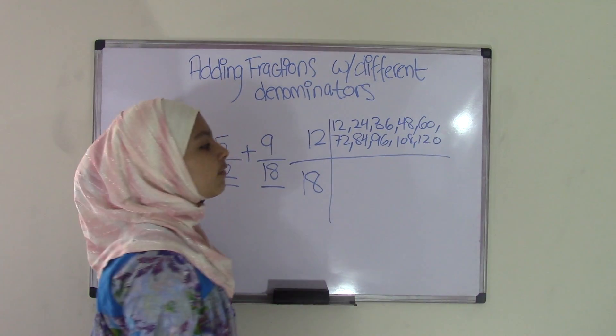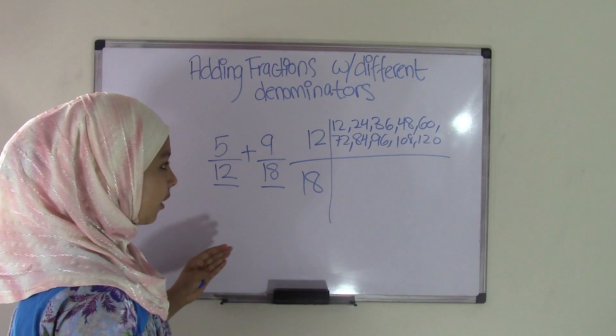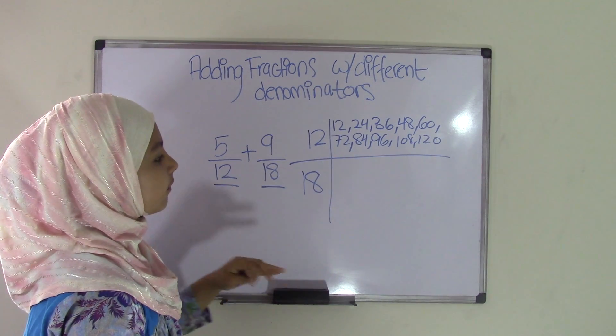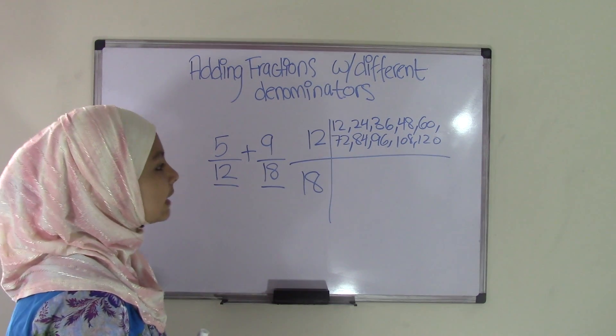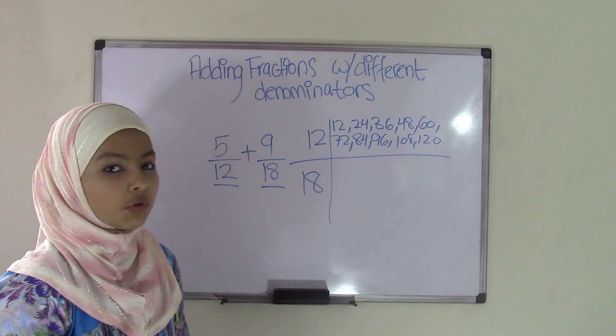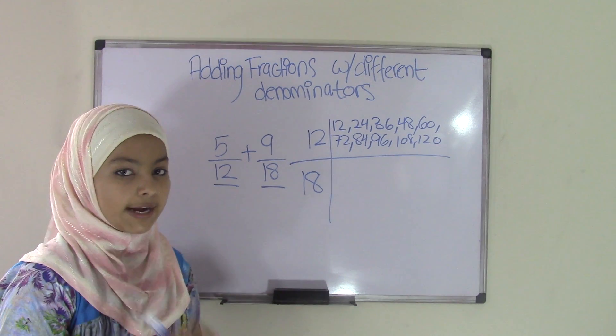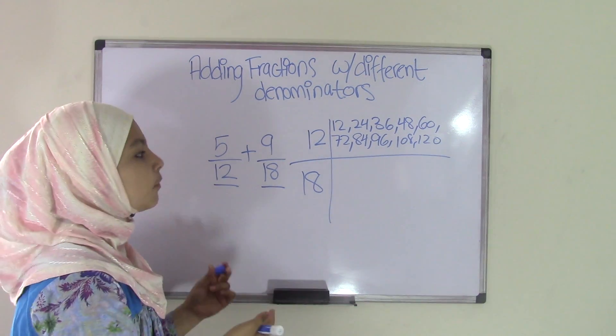As you can see, I've listed the first 10 multiples of 12. Now, before I start writing all the multiples of 18, I just want to say that it's not important to write all the multiples. Like, for example, if I'm going and in the middle I find the common multiple of both of these numbers, I can just stop there.